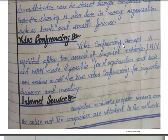The concept of video conferencing originated after the arrival of computer networks. LAN and WAN — local area networks and wide area networks — made it possible for organizations to have live video conferencing for important discussions and meetings. For example, Zoom, WhatsApp, and Messenger — you can do video conferencing and video calls through computer networks.